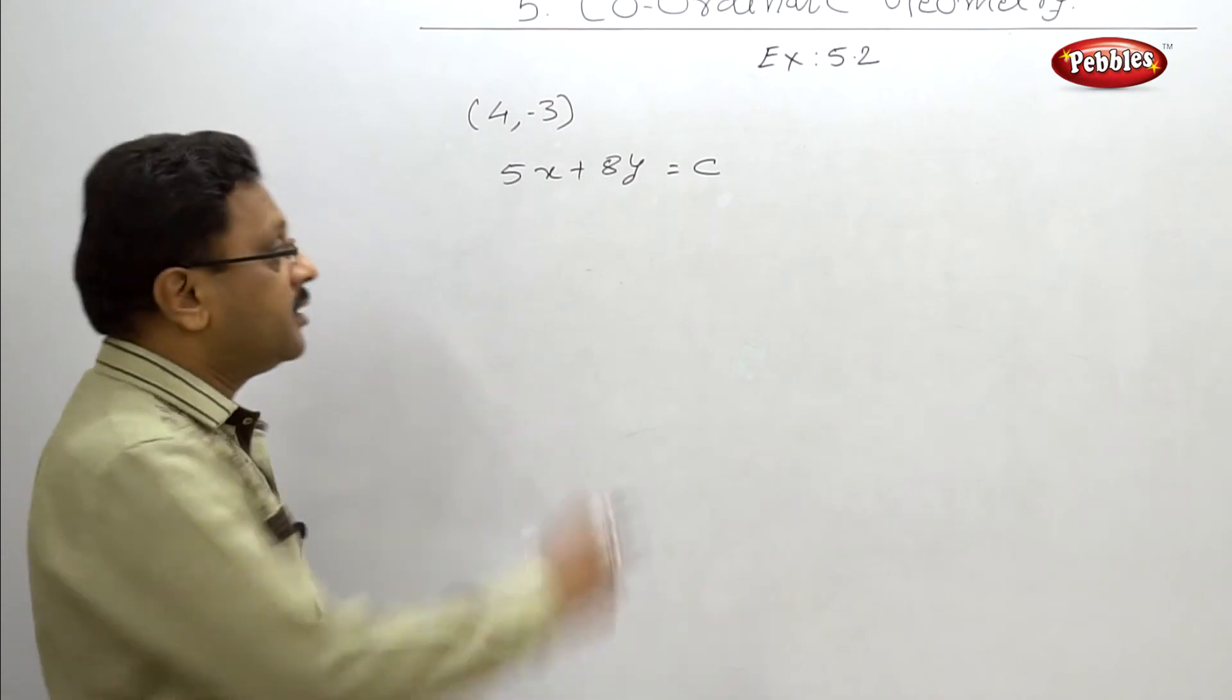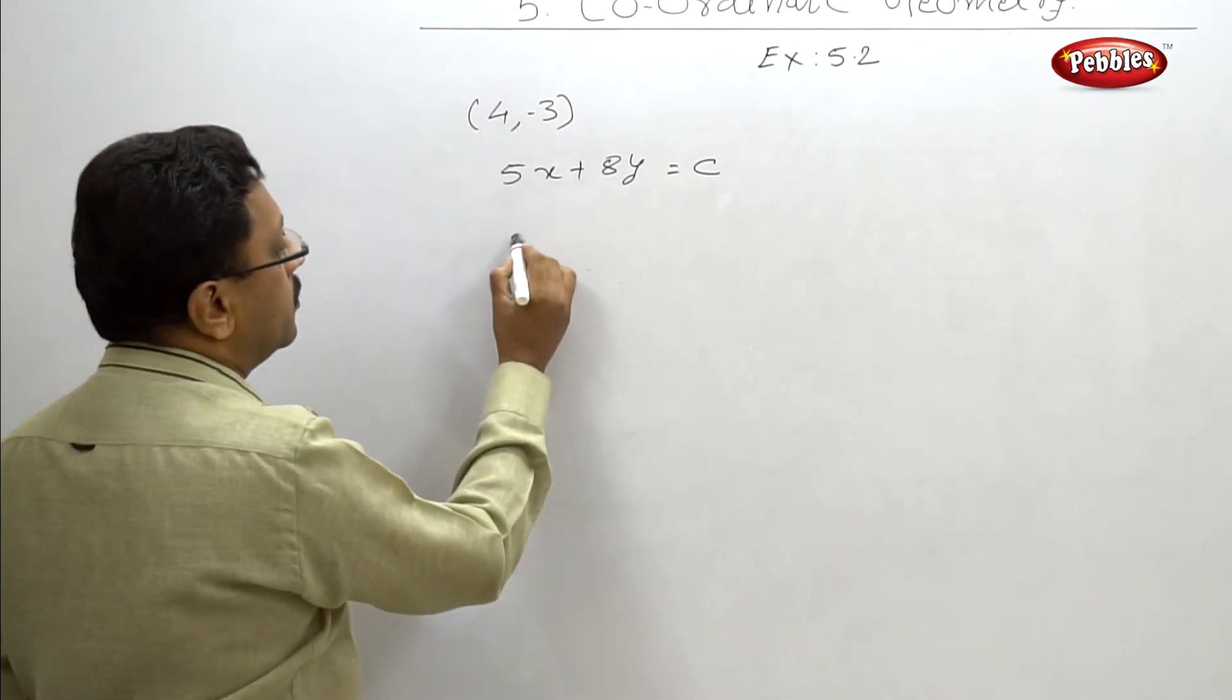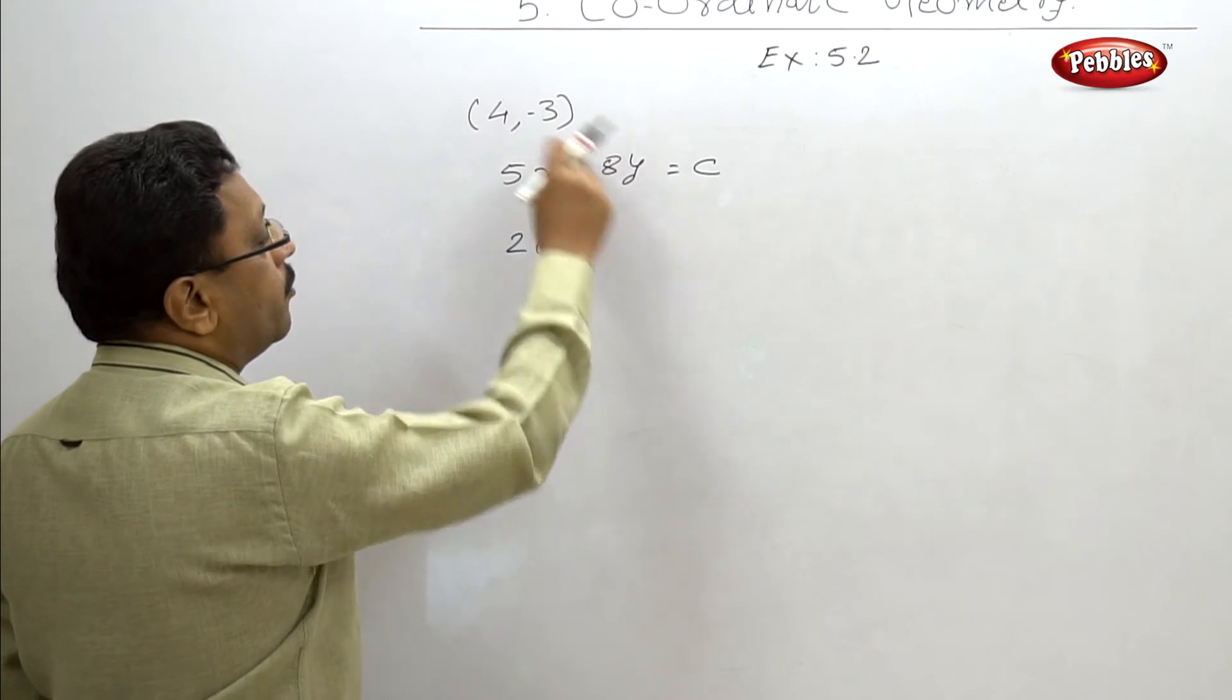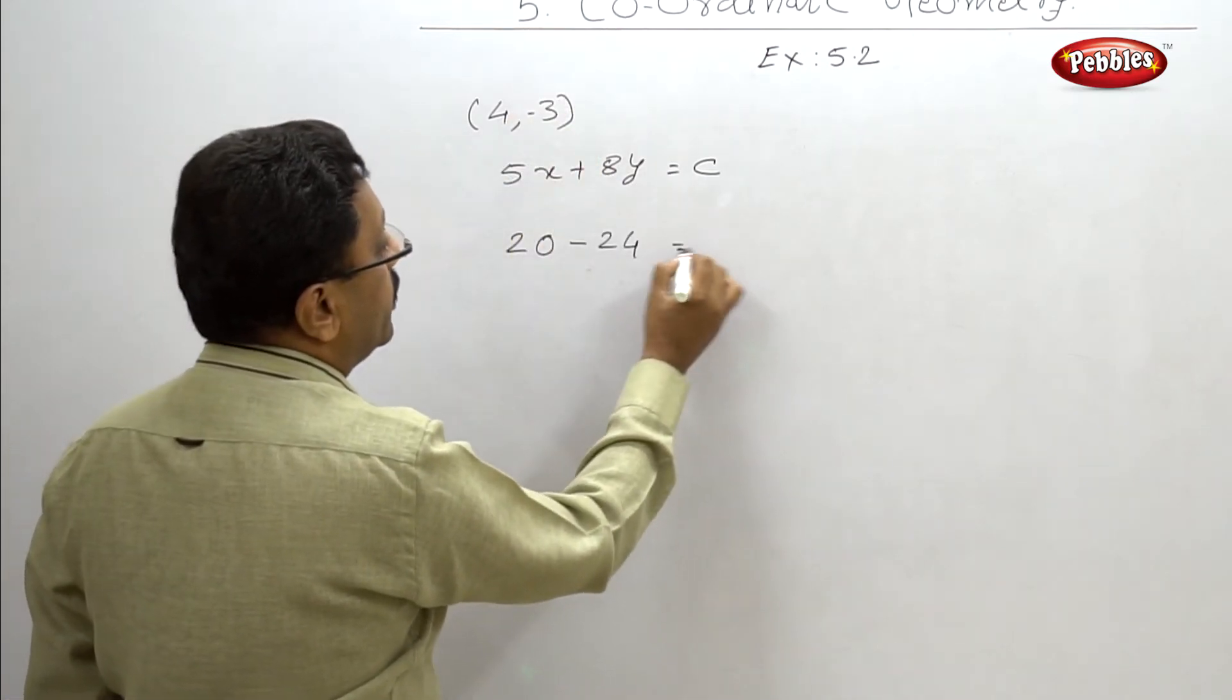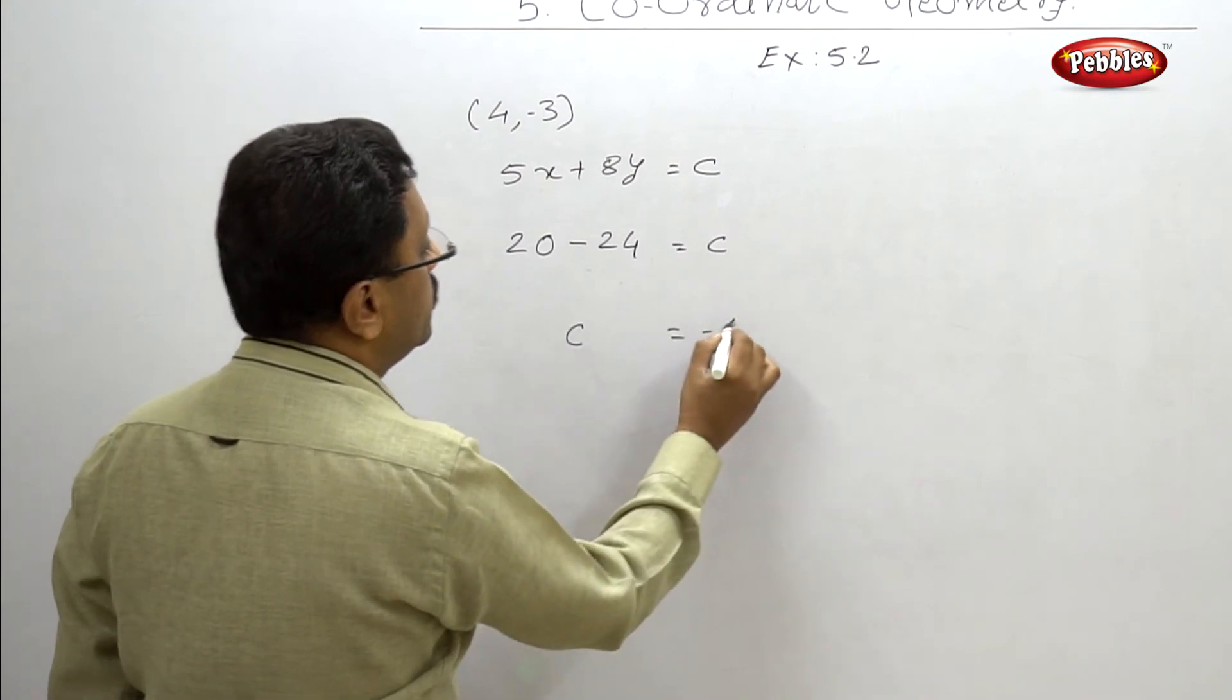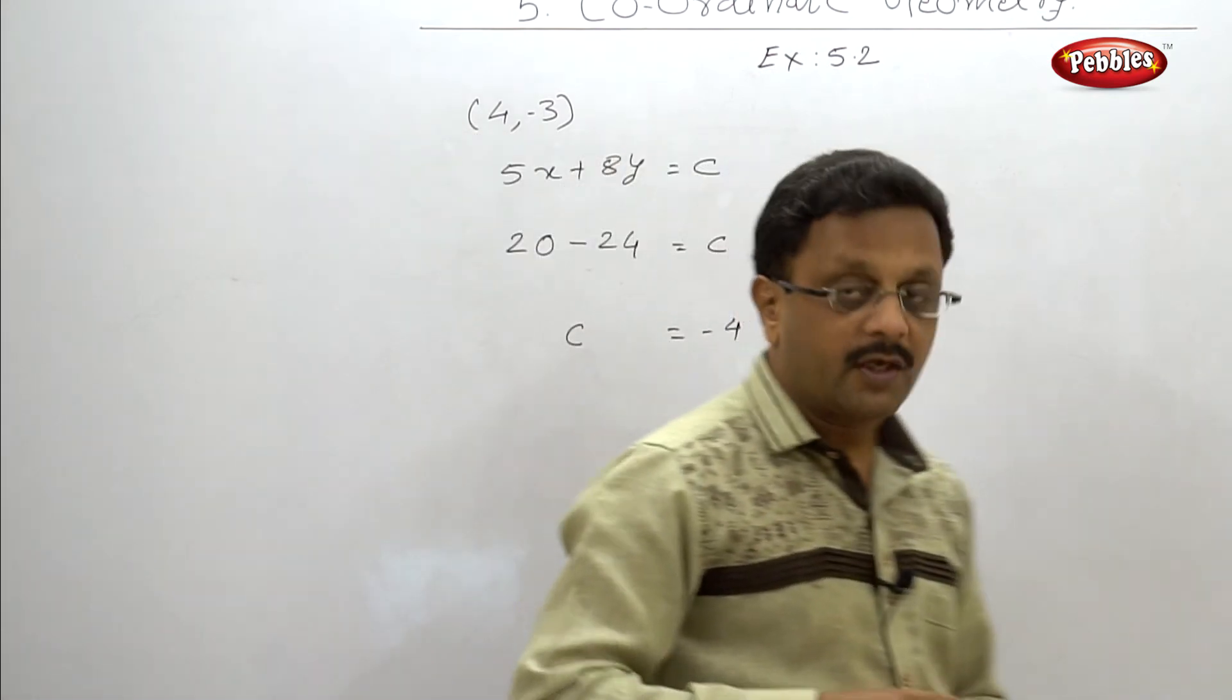Let us replace x and y. So, 5 into 4, 20, y by minus 3, that is 24 equal to c. So, c is equal to minus 4 in this case.